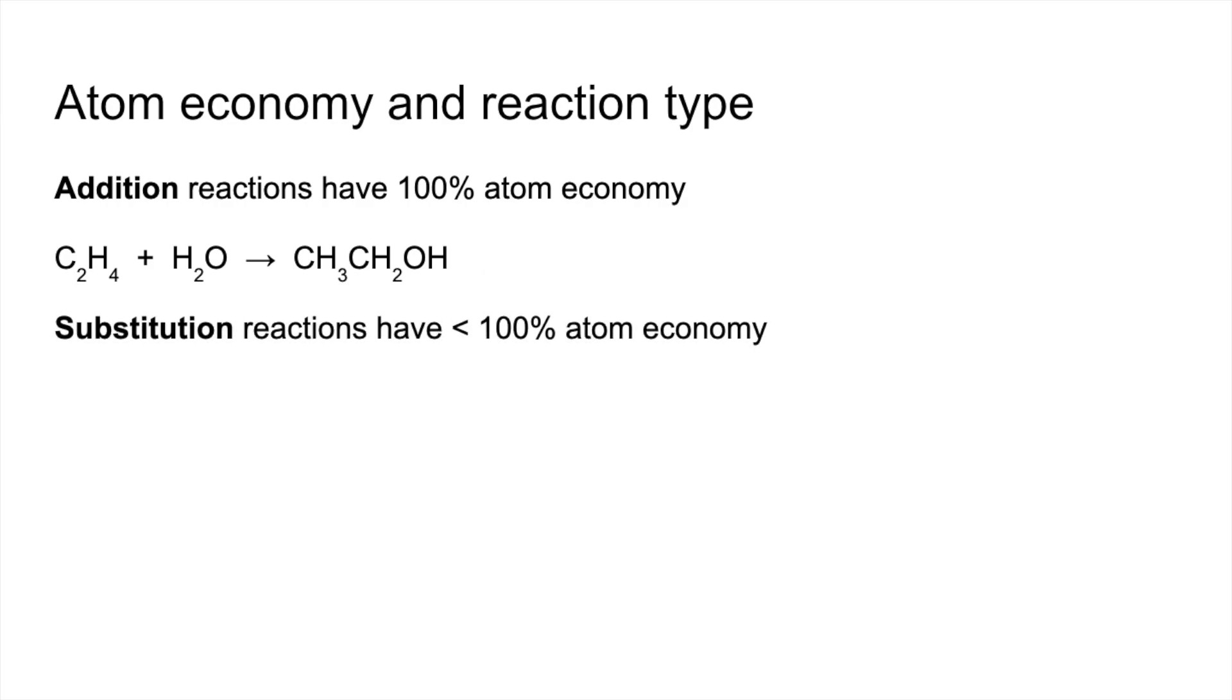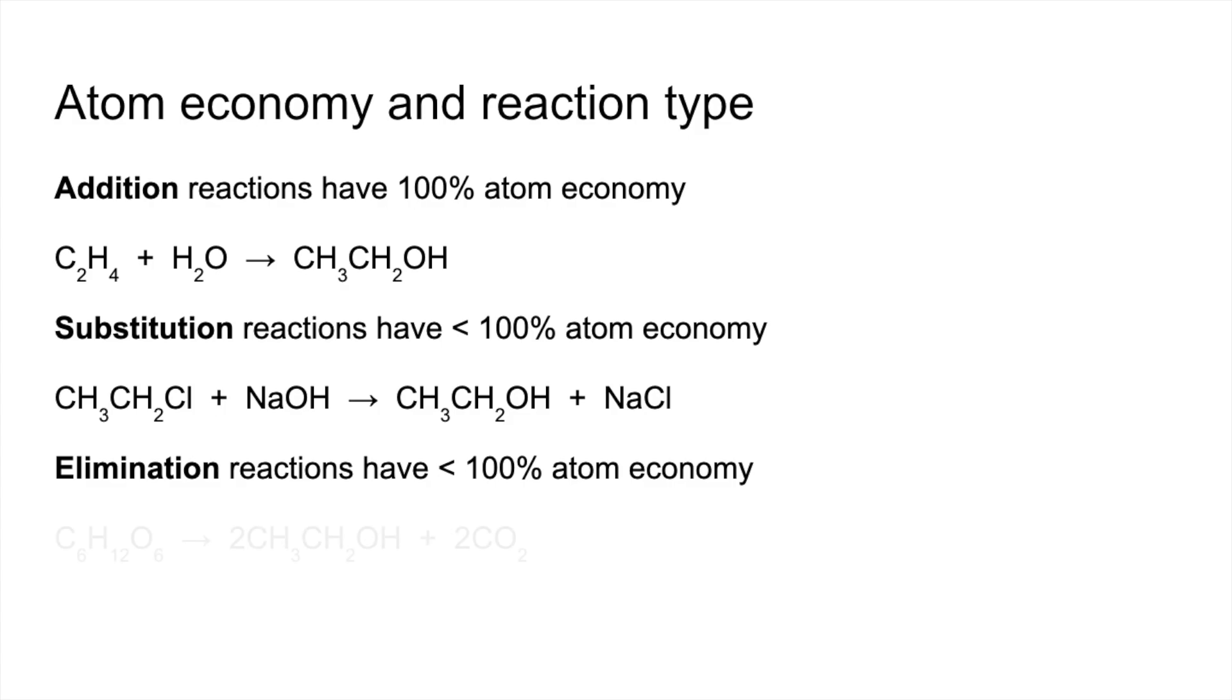Substitution reactions would always be less than 100% atom economy and so the reaction to make ethanol via a substitution reaction looks like this. And finally elimination reactions, they also have less than 100% atom economy and to make ethanol via an elimination reaction you could do this one here from glucose.